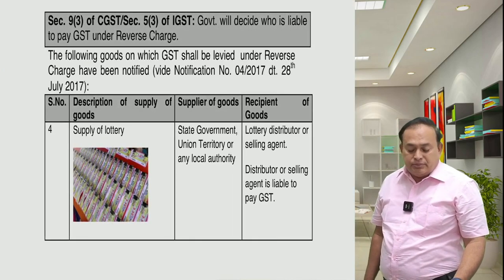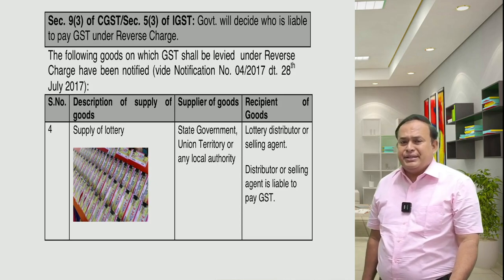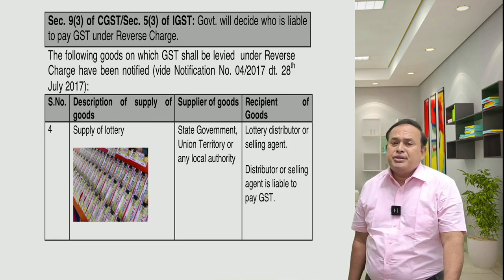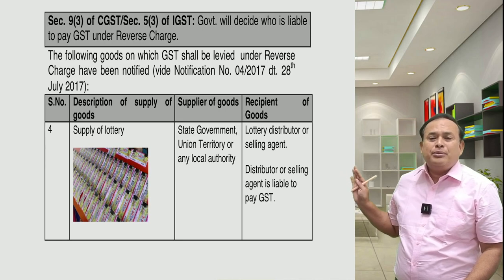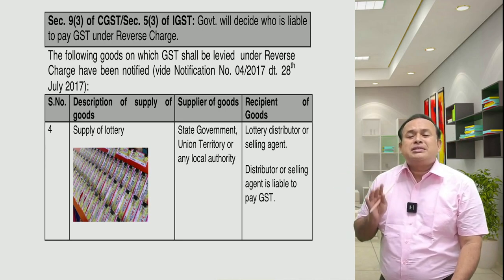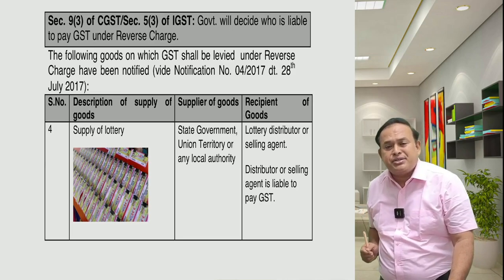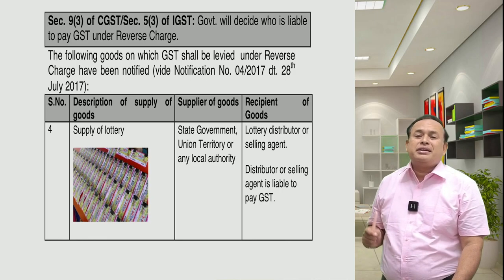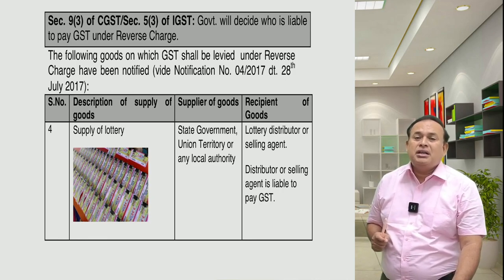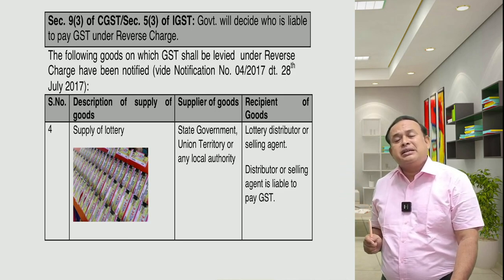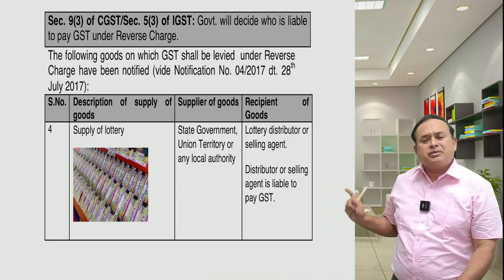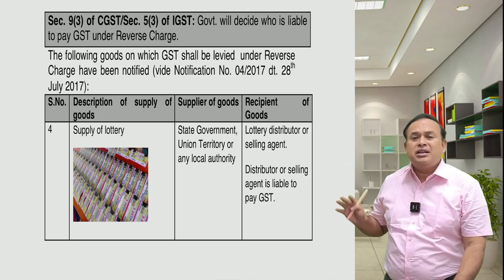Supply of lottery tickets — which is one of the specified actionable claims as defined under Section 2(102)(e) of the CGST Act — is treated as goods. State governments or local authorities are competent to print and sell lottery tickets. The supplier is the state government or local authority. The recipient is a commission agent. In that case, the recipient being a commission agent is only liable to pay GST on such supply of lottery tickets, which is under reverse charge. Its valuation will be referred under the valuation chapter.